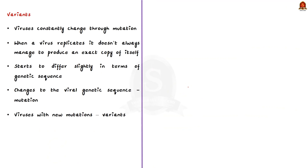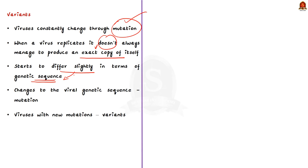Now we shall see the mutations that occur in viruses. Viruses constantly change through mutation and new variants are expected to occur. When a virus replicates, it doesn't always manage to produce an exact copy of itself, so over time the virus may differ slightly in its genetic sequence. Any change to the viral genetic sequence during this process is called a mutation, and viruses with new mutations are sometimes called variants.